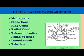Coming to the parts of the water vascular system: it can be divided into the madreporite, stone canals, ring canals, radial canals, Tiedemann bodies, polian vesicles, lateral canals, and tube feet. In the diagram you can see the madreporite and stone canals very clearly.